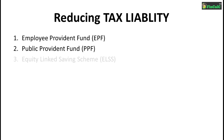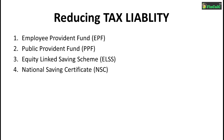The third scheme is ELSS — that is equity linked savings schemes. This is a special type of mutual fund that allows you to claim tax exemption from your gross taxable income. The fourth scheme is NSC, that is national savings certificates, which also allows you to claim tax exemption. The fifth scheme is 5-year fixed deposits, which can also help you claim tax exemption.